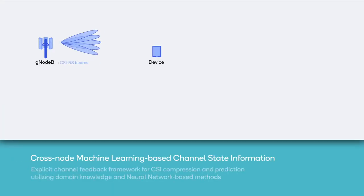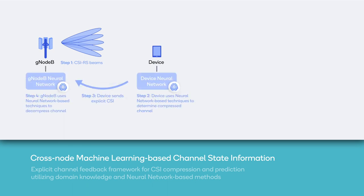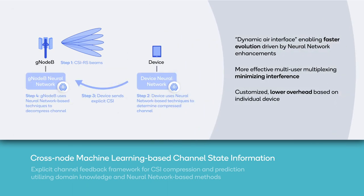Building on last year's system simulation, we have implemented our design of machine learning-enabled air interface in our 5G Wide Area Test Network in San Diego. In this over-the-air demonstration, we are focusing on how cross-zone machine learning can dynamically adapt channel state feedback for an advanced massive MIMO system. The device sends explicit CSF back to the gNB. The explicit channel feedback framework allows for customized low-overhead feedback based on individual device channel conditions and delivers more efficient multi-user multiplexing.